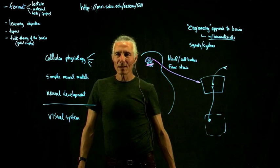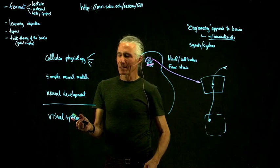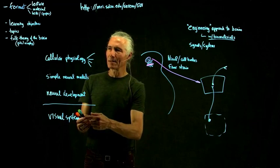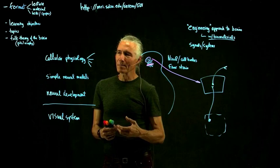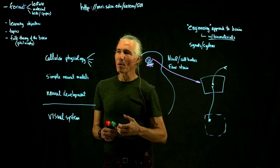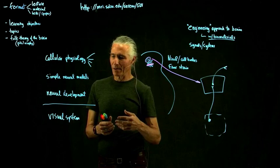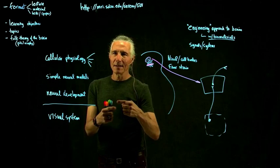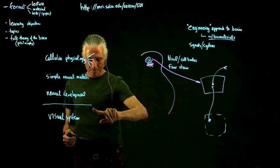Then we'll start with the main sensory modalities, beginning with the visual system. I spent a lot of time working on the visual system, and it's the biggest system in the primate brain. It's not the biggest in say a bat or a mole, but in primates the visual system is by far the biggest — about four times bigger than the other sensory systems. The visual system is about half, the auditory system about one eighth, the somatosensory system about one eighth, the motor system about one eighth, and the limbic system about one eighth.